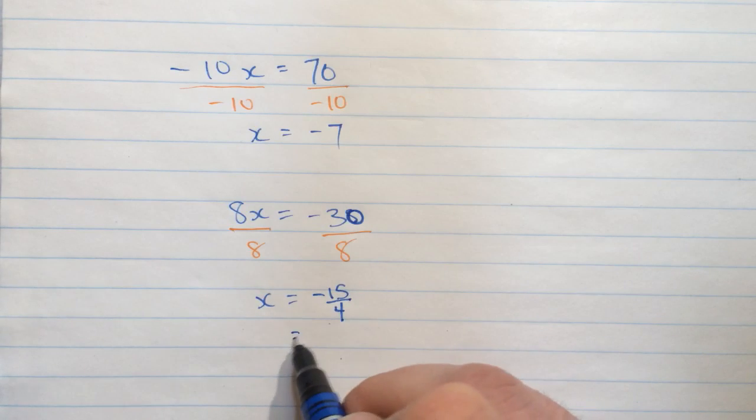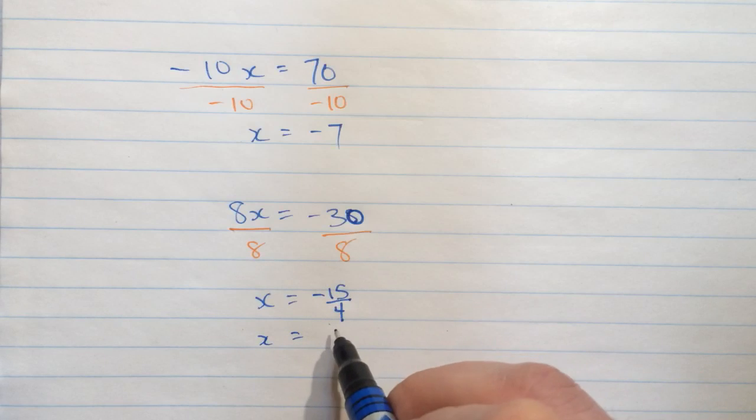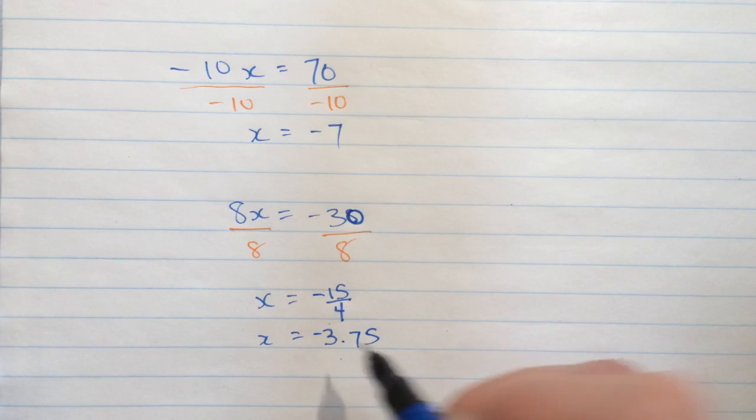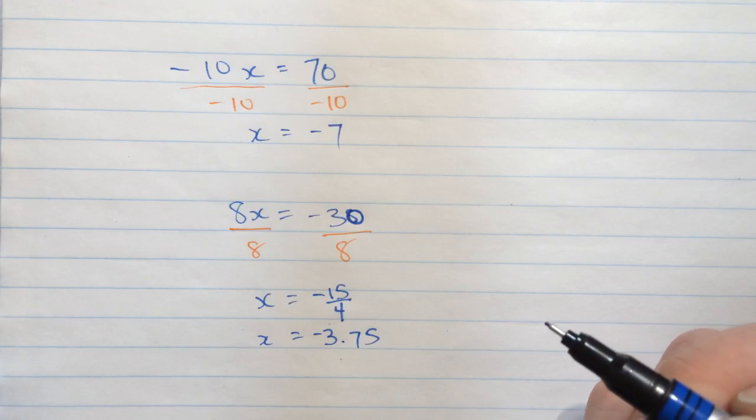Now, if you wanted to, you could also write that as a decimal value, which is going to be 3 and 3 quarters. So 3.75. And it's still a negative value.